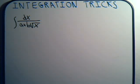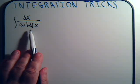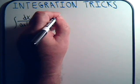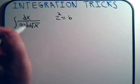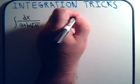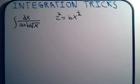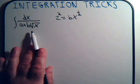The trick here is, for b times the square root of x, let that be equal to z squared. So z squared equals b times x to the one-half power. This gives us a plus z squared in the denominator.